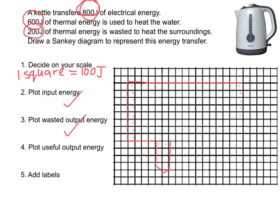So one, two, three, four, five, six. So the bottom of our arrow needs to be there. Then we can draw our arrow. The last thing we need to do is just the finishing touches—draw that line up to there and that line up to there. So we've plotted our useful output energies.